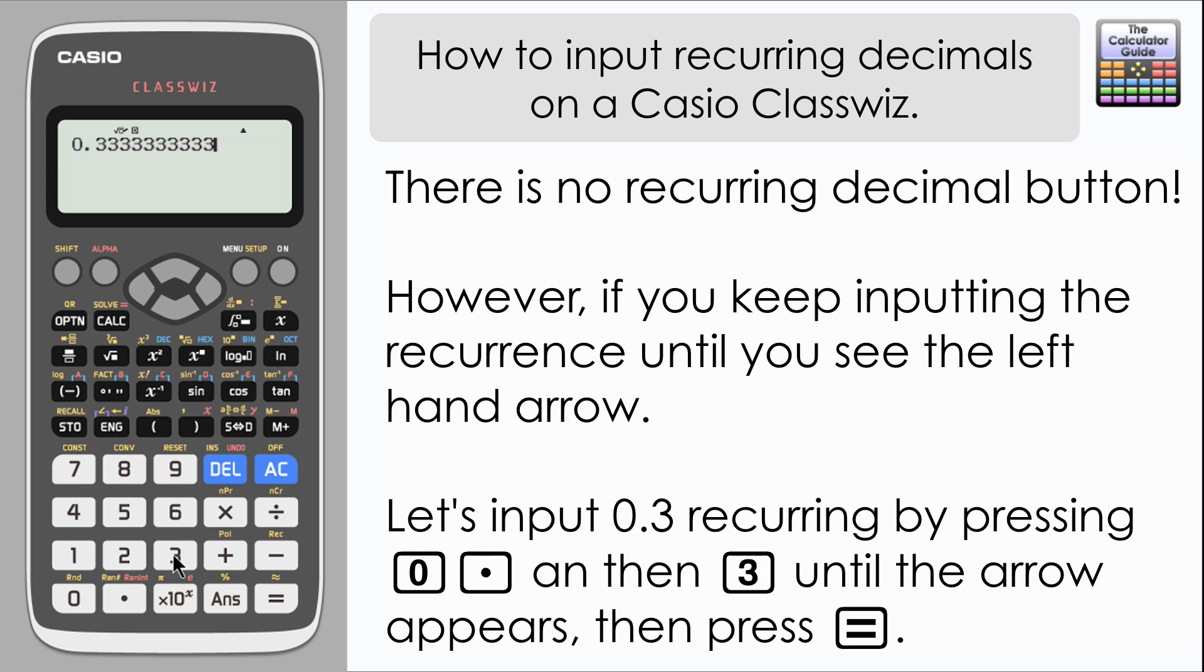I'm going to start by inputting 0.3 recurring. What you need to do is repeatedly press 3 until you see the left-hand arrow come up. Then you know you've got enough digits. If you press equals at this stage, the calculator will register that as one-third.